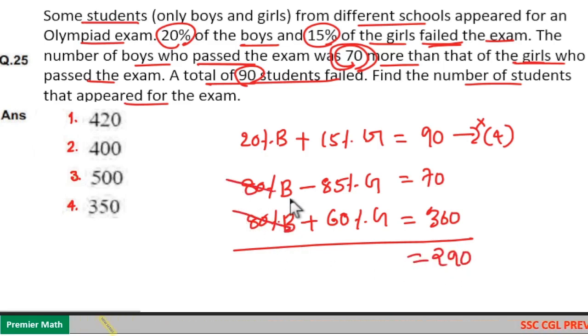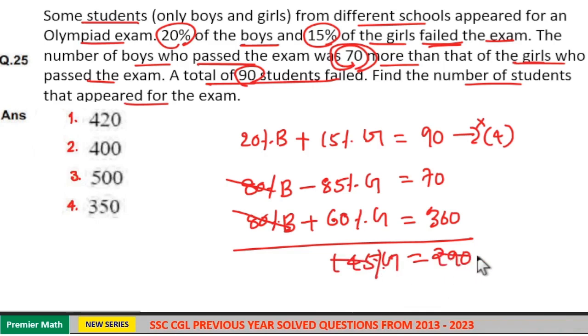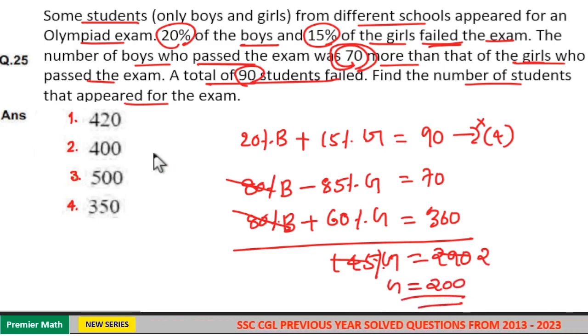Now, these two terms cancel. 60 minus minus 85 is equal to 145 percentage girls. Now, 145 goes two times in 290. Which means girls is equal to 2 into 100, 200 girls. Total girls is 200.